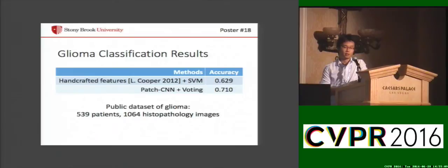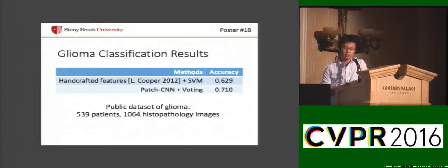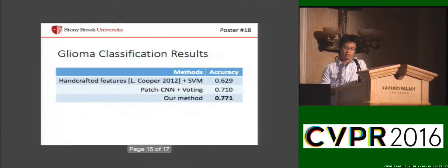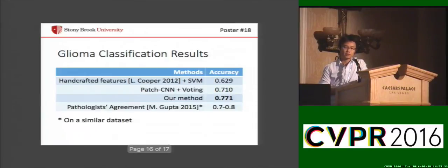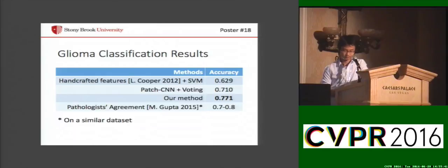For the results, I will show some results on the Glioma dataset. Glioma is one of the leading causes of cancer-related deaths and the most common brain cancer. As you can see, the patch-based CNN with voting already outperformed handcrafted features. Our method achieved state-of-the-art results. Additionally, we searched online for the pathologist agreement rate, and we are quite close — so we achieved state-of-the-art and close to human performance.